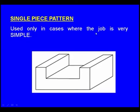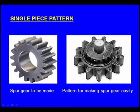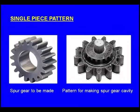The single piece pattern is used only in cases where the job is very simple. We want to make a spur gear using the casting process and the pattern will be like this. This single piece will be kept inside the drag box and the moulding sand is compacted. Afterwards we make the drag box upside down, place the cope box, place the riser pin and sprue pin, and again compact in the cope box. In the case of the single piece pattern, the mould cavity lies only in the drag box.